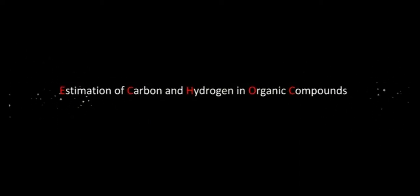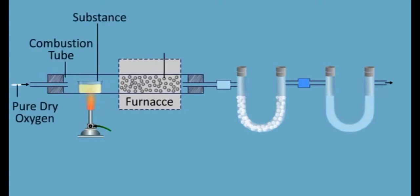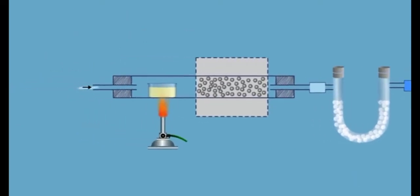The apparatus used for detection of carbon and hydrogen in organic compounds is shown on the frame. Using this apparatus, the amount of carbon and hydrogen in an organic compound is determined. Firstly, the substance is heated with copper oxide.